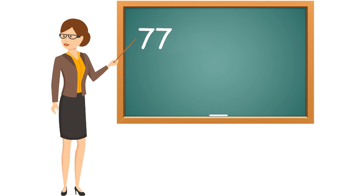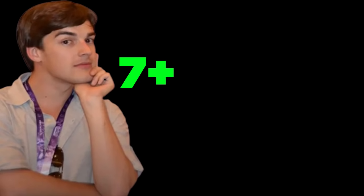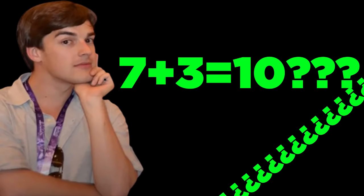The teacher said that 77 plus 33 was a cold 110. But how can that be the case when 7 plus 3 is 10? Where did the extra 10 come from?